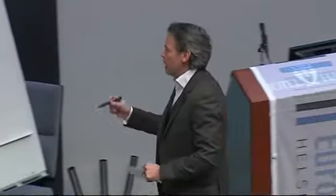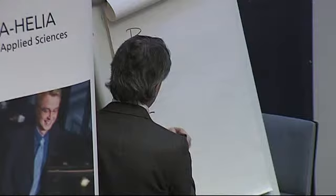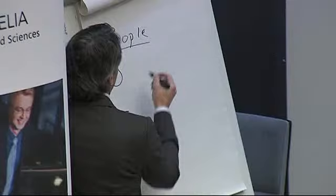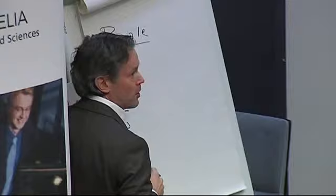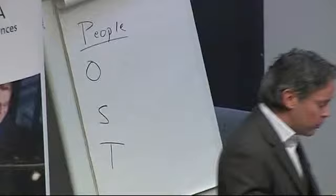There's a method of planning for social media marketing called POST. P stands for People, O is Objectives — that's the word no presenter wants to say — S is Strategy, and T is Technology. We talk about technology a lot. These seminars are full of Twitter and Facebook and such, but we really need to talk about people and human behavior first.